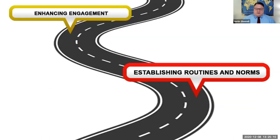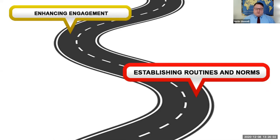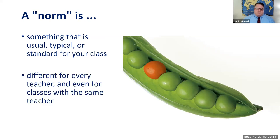The next topic in our roadmap is establishing routines and norms — a really important part of classroom management. A norm is just something that's usual, typical, or standard for your class — a regular thing you do. An important thing to remember about norms is that they're different for every teacher in every classroom. What your colleague does may fit for your classroom or it may not — you may have to choose something different. A routine is something that's performed as part of a regular procedure.